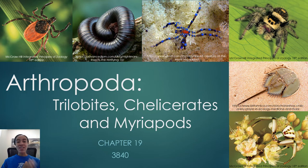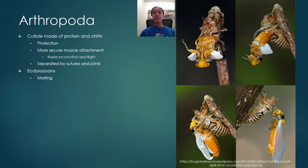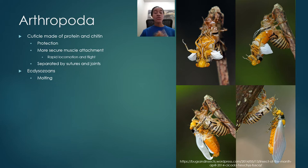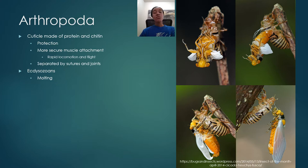We're going to start with chapter 19 looking at the trilobites, chelicerates, and myriapods. Before we talk about specific arthropods, it's important to understand what arthropods are and some key shared characteristics. Arthropods belong to the large phylum Arthropoda, which is the largest and most diverse phylum of all animals on this planet. All arthropods have a cuticle - unlike the cuticle in nematodes which is primarily collagen, the arthropod cuticle is primarily composed of protein and the polysaccharide chitin.